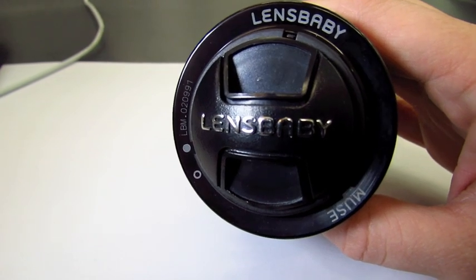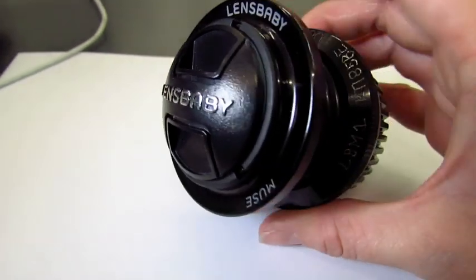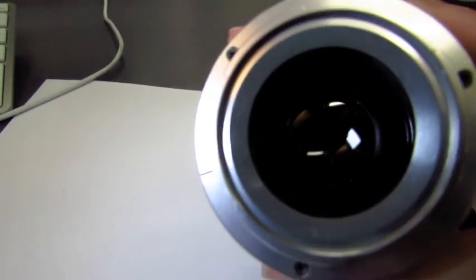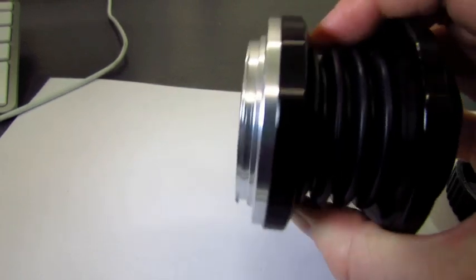So there's this attachment that you can put onto SLRs, it's called a lens baby and this is basically it. And if I just take off the back, you'll see that this attaches onto an SLR.